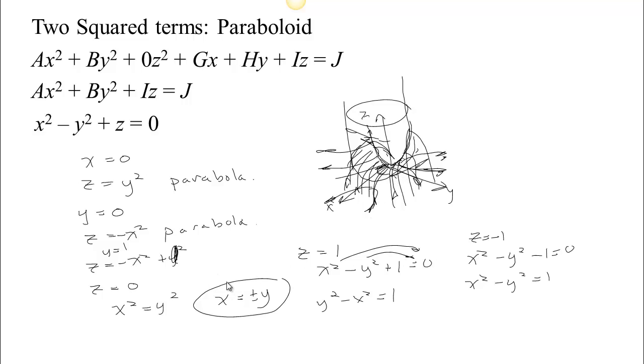So basically, no matter what constant we slice with for z, we're seeing either hyperbola or sort of this special case, the asymptotes of that hyperbola. So this shape is mostly parabolas, therefore we call it a paraboloid, and it's got hyperbolas in the other direction. So we call this guy a hyperbolic paraboloid, as opposed to an elliptic paraboloid.